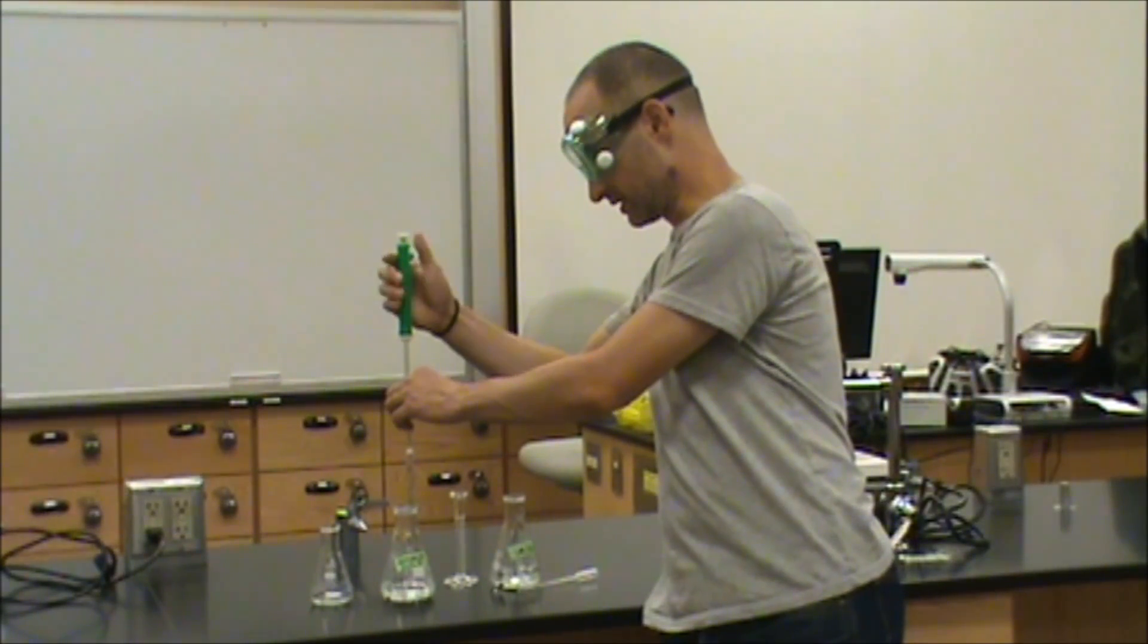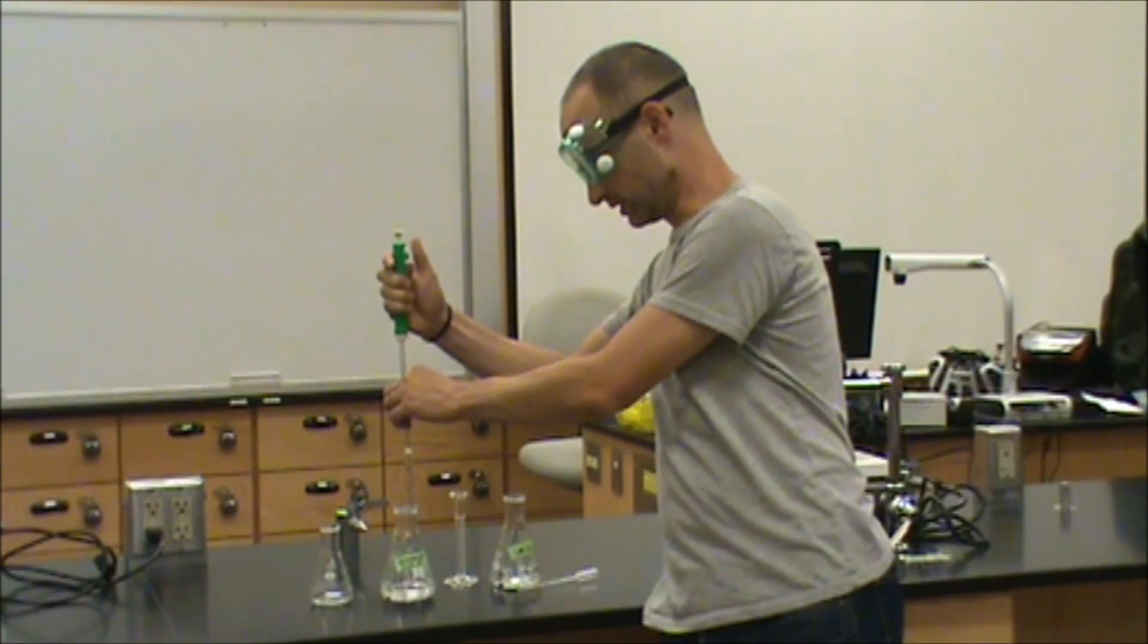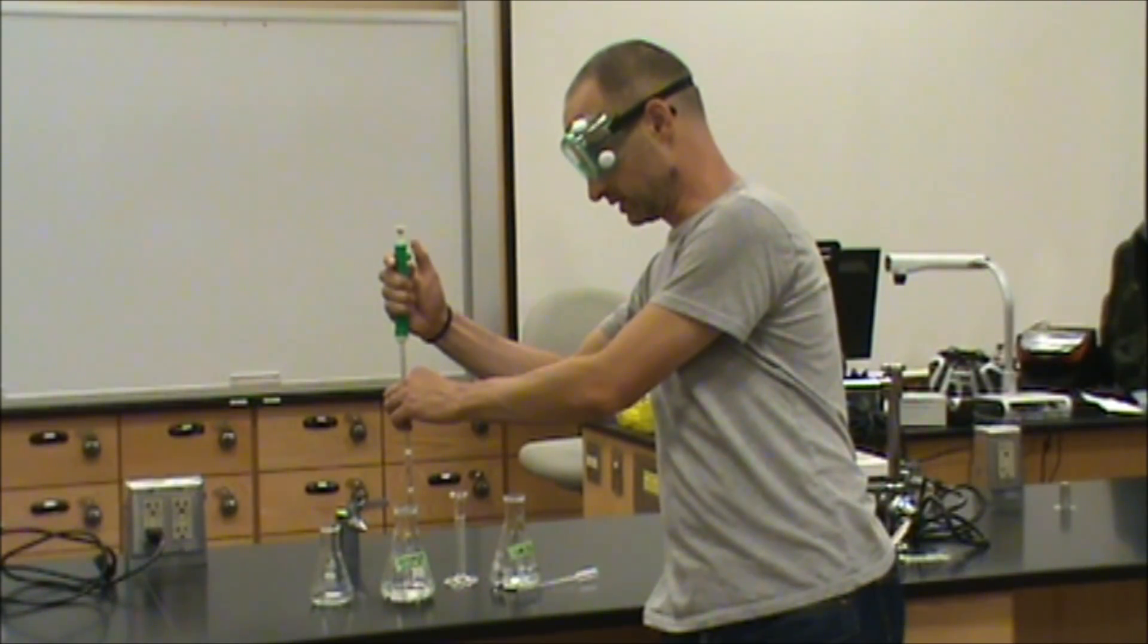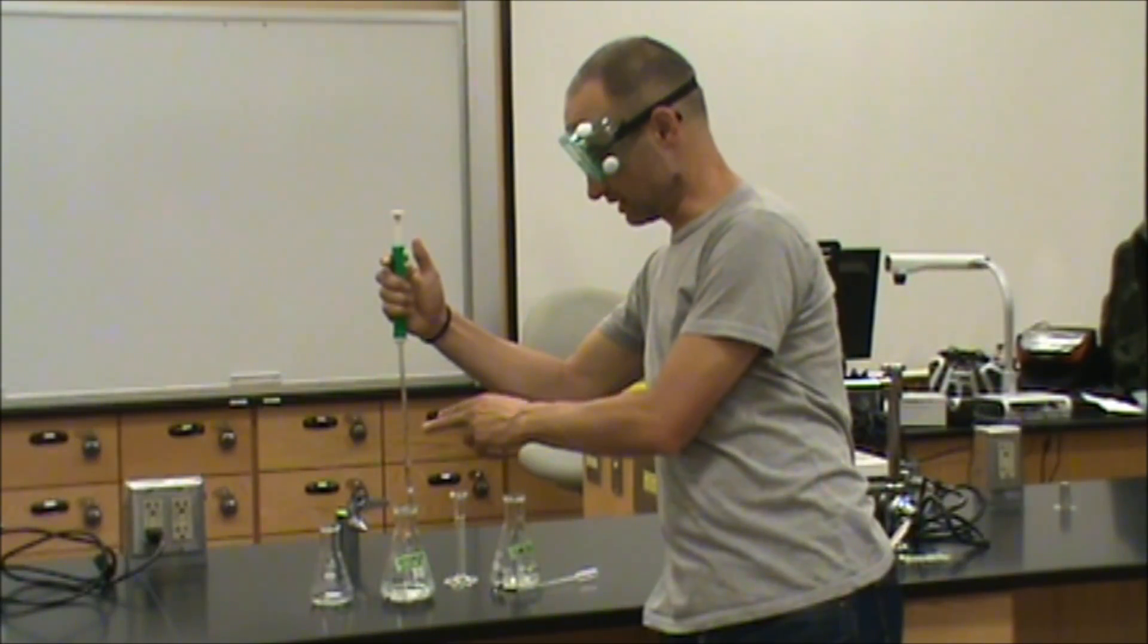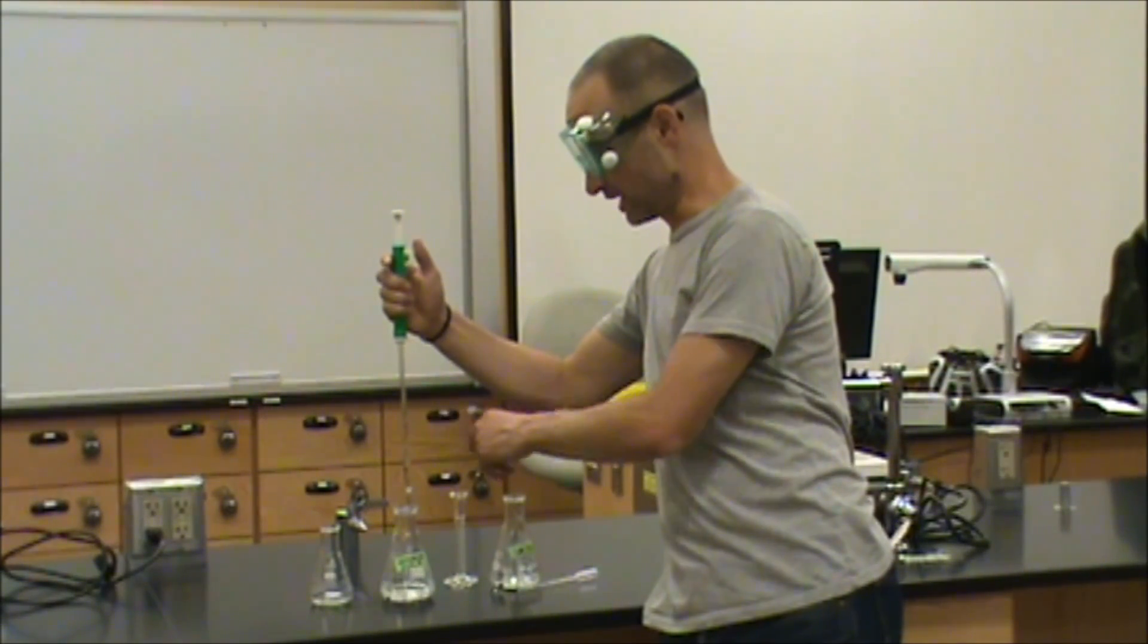As demonstrated in the acid-base titration tutorial, we want to use the thumb wheel to draw the peroxide up into the volumetric pipette until the bottom of the meniscus touches the marking that's just above the wide portion.